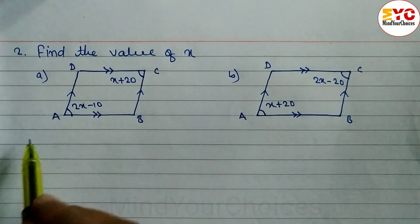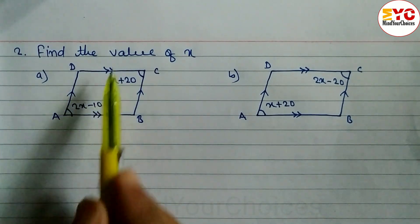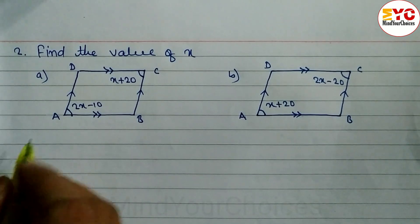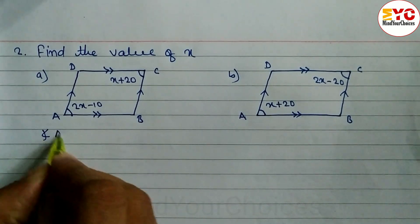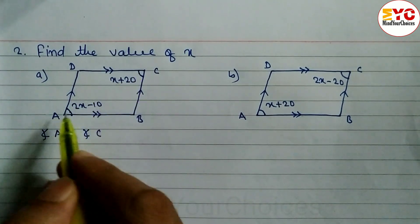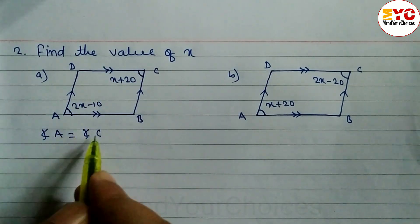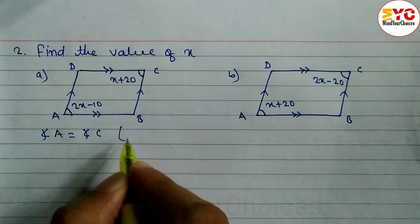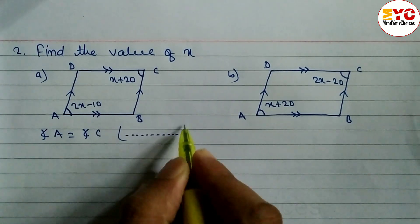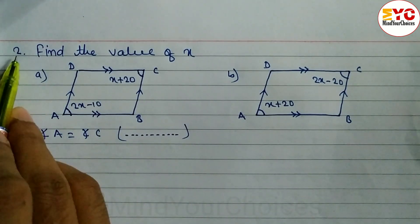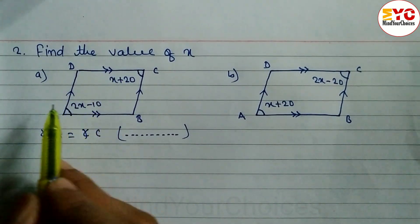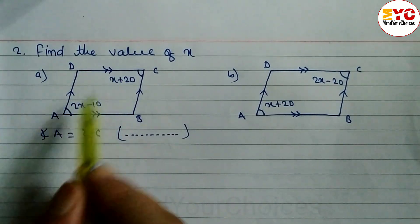A parallelogram means opposite sides are equal and opposite angles are also equal. So we can write here: angle A is equal to angle C. The reason we write down is that opposite angles of a parallelogram are equal. In number one we learned opposite sides are equal, and in number two opposite angles are equal.